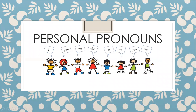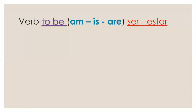First, we are going to review the personal pronouns in the verb to be. Don't forget that the personal pronouns replace a person, thing, or animal. No olviden que los pronombres personales reemplazan a una persona, animal, o cosa. And the verb to be means ser o estar. El verbo to be significa ser o estar. In English, it has three forms: am, is, are. Tiene tres formas que son am, is, are, y significan ser o estar.